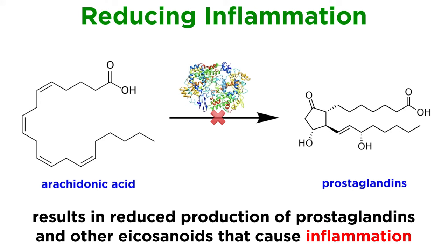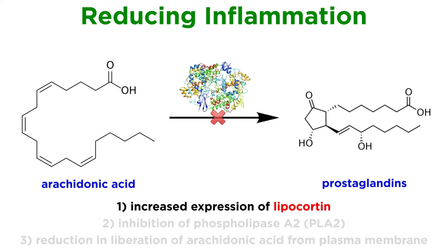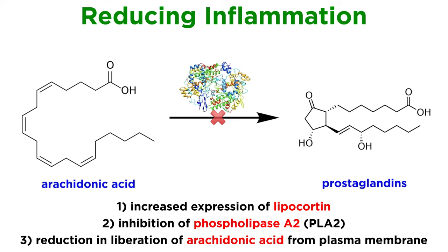This reduces the production of prostaglandins and other eicosanoids that cause inflammation. Glucocorticoids increase the expression of lipocortin, which inhibits PLA2, thus reducing the liberation of arachidonic acid from the plasma membrane. This further reduces the enzymatic turnover of COX to produce pro-inflammatory prostaglandins, since arachidonic acid is a key substrate for this enzymatic reaction.